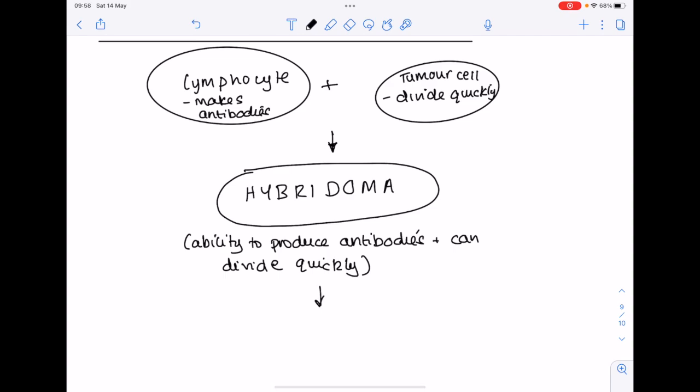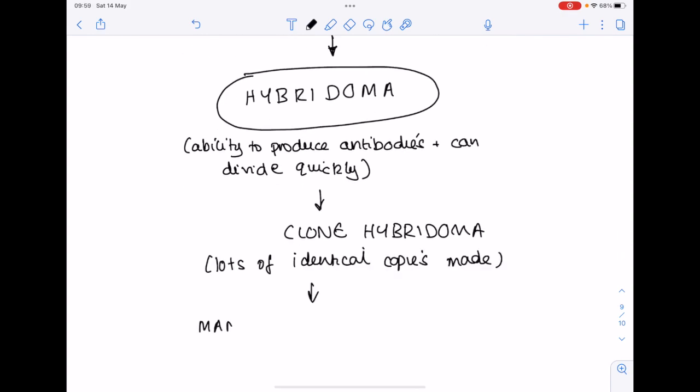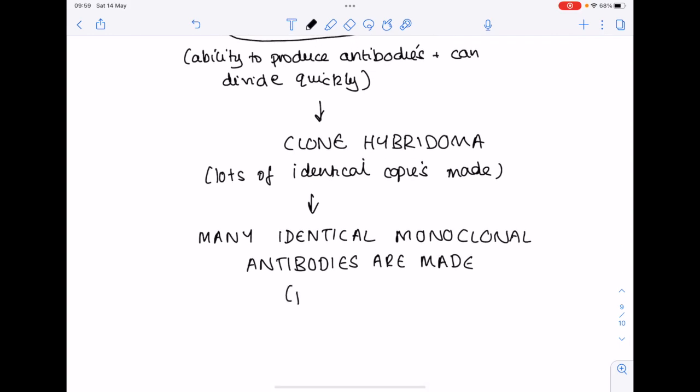You'd get what's known as a hybridoma. A hybrid car uses electricity and regular fuel, so a hybridoma is simply a cell which combines both a lymphocyte and a tumor cell. It has the ability to produce antibodies and to divide quickly. Our next step in making monoclonal antibodies is that we clone that hybridoma, making lots of identical copies. Many identical monoclonal antibodies are made which are then purified.